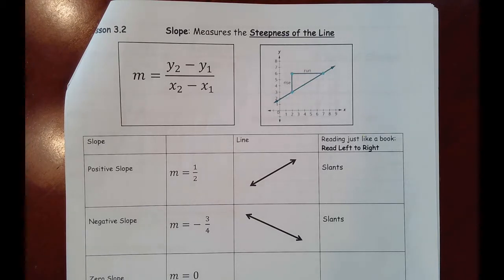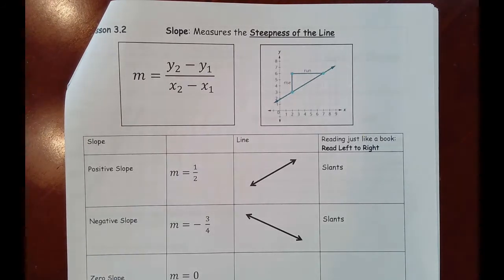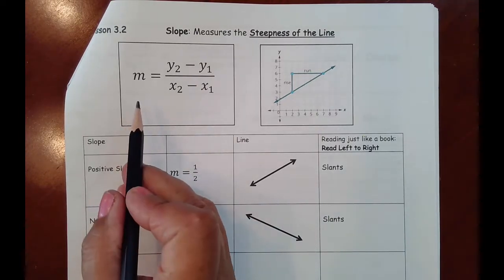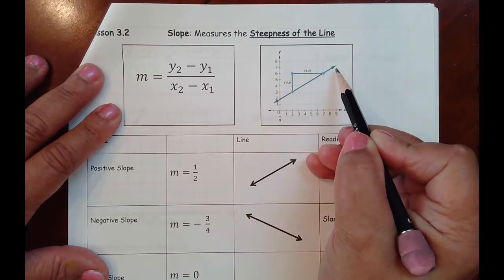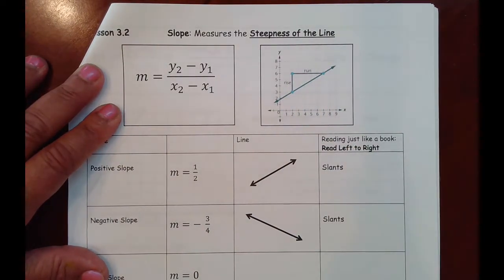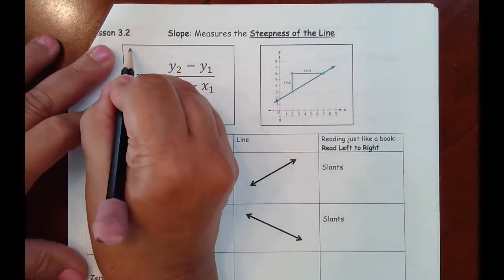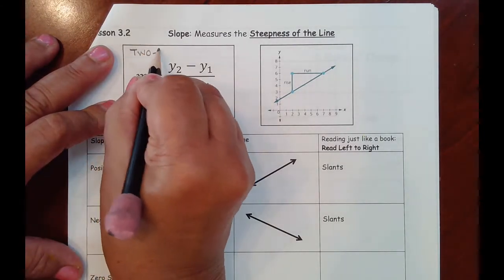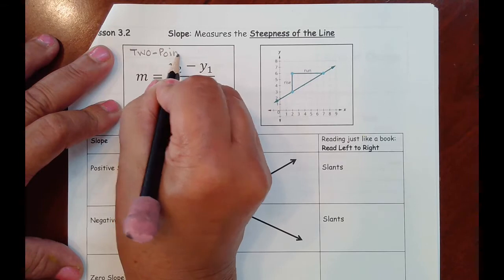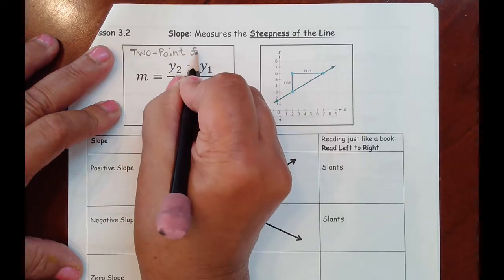We'll also use the slope as well as the y-intercept from lesson 3.1 to write the equation that describes the line. Let's first get into a formula you've probably seen several times. This is how you find the slope of a line — remember, it's how slanted the line is, in other words how steep it is. You can calculate it if you have two points. This is referred to as the two-point formula for slope.